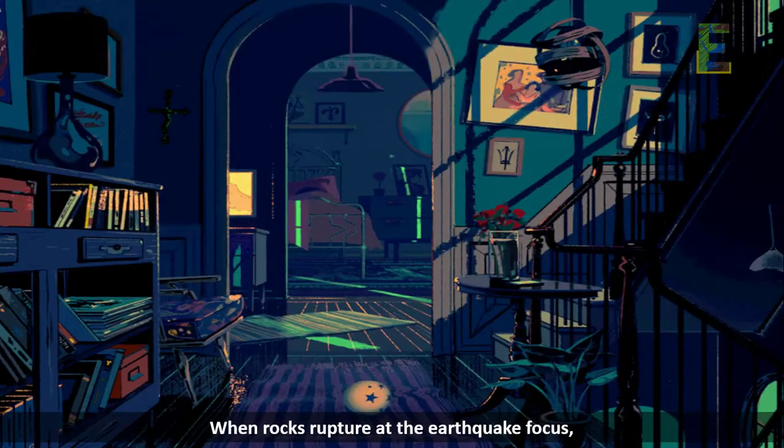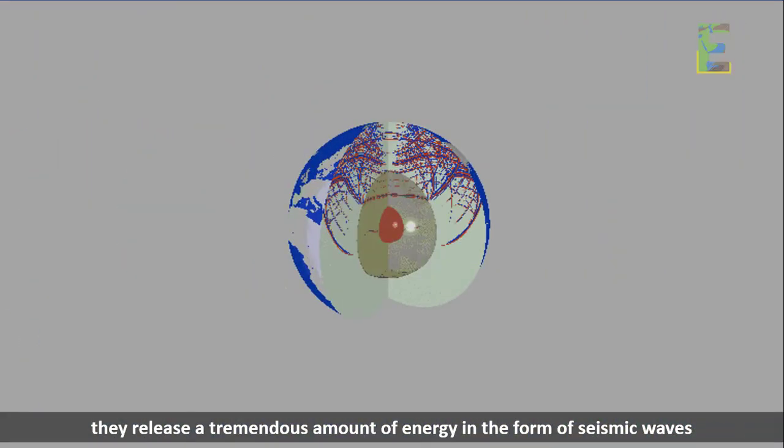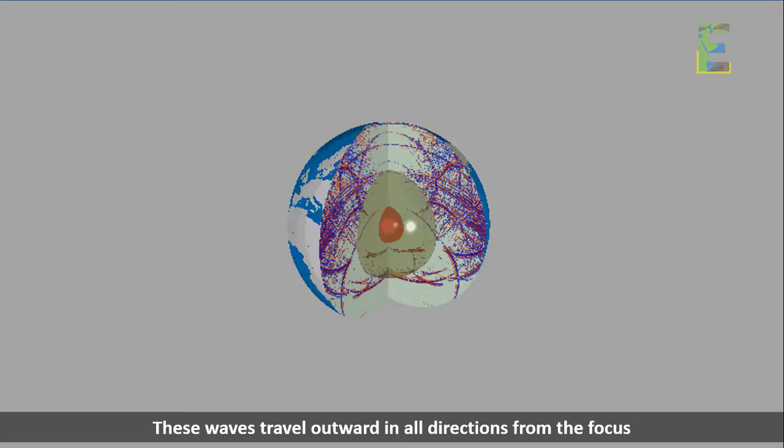Energy release. When rocks rupture at the earthquake focus, they release a tremendous amount of energy in the form of seismic waves. These waves travel outward in all directions from the focus.